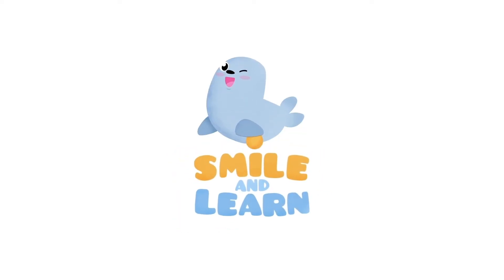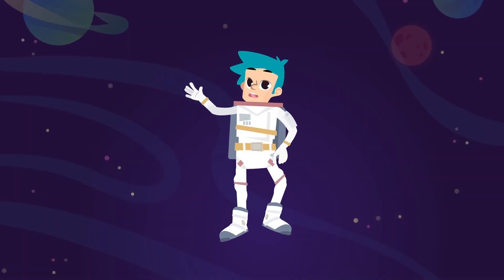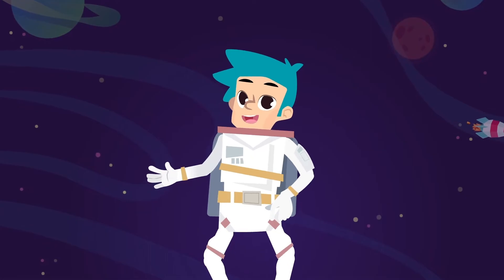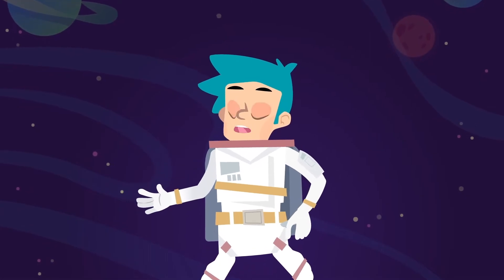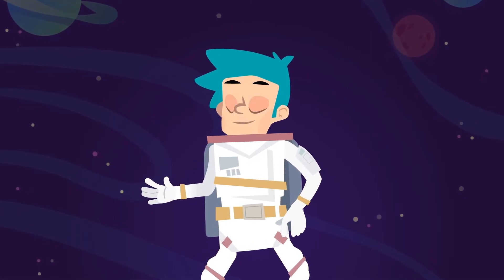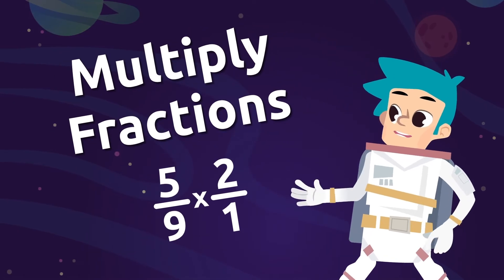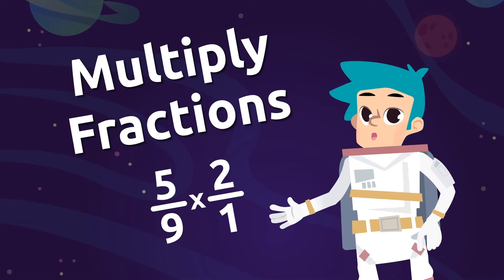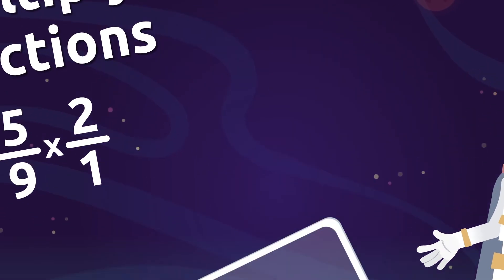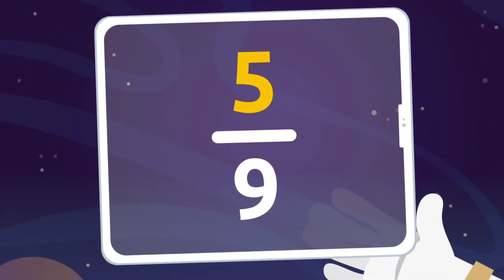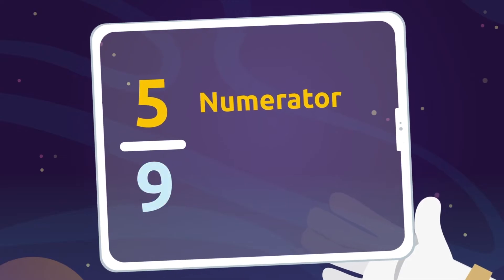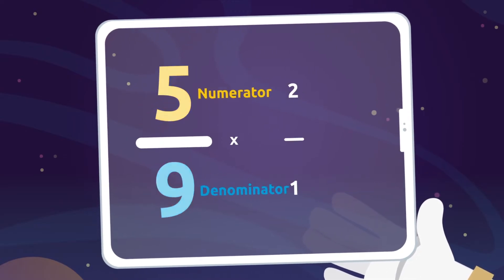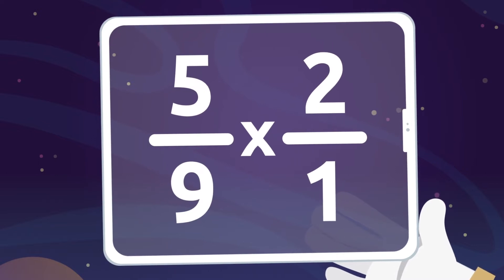Hello again friends! We continue practicing operations with fractions. Today we're going to learn how to multiply fractions. First, let's recap the parts of a fraction. The top number is the numerator and the bottom number is the denominator. Now we're ready to start.